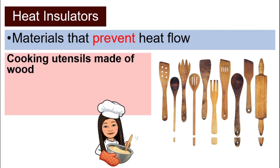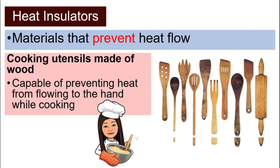Next, another example of heat insulators is cooking utensils made of wood. They are capable of preventing heat from flowing to the hand while you're cooking. Another good example is the handle of a frying pan. Just now we looked at the bottom of a cooking pan made of a heat conductor; however, many handles of pots or pans are made of wood — a heat insulator — so that you can hold the pan while cooking without your hand getting burnt.